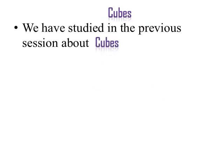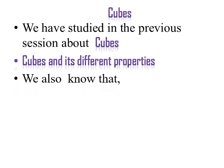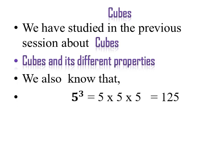We have studied in the previous session about cubes and its different properties. We know that 5 cubed can be written as 5 × 5 × 5 = 125, and 3 cubed equals 3 × 3 × 3 = 27.